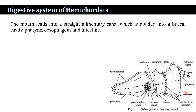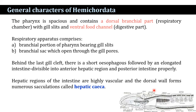The digestive system begins at the mouth, which leads into an alimentary canal divided into buccal cavity, pharynx, esophagus, and intestine. The pharynx is spacious.